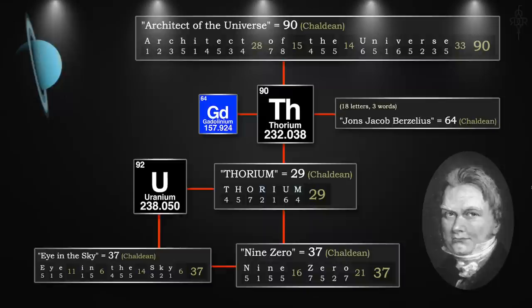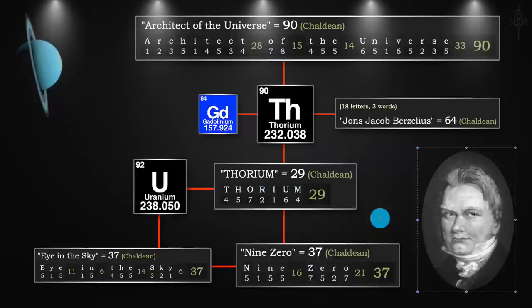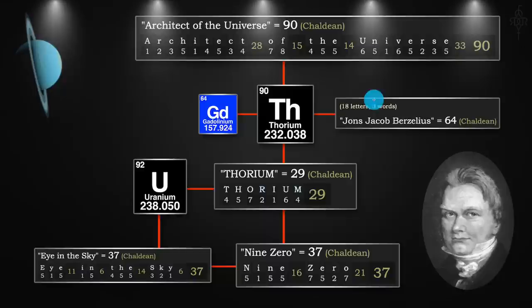We're going to start with the architect of the universe — you can clearly see at the top there it's the number 90. We bridge it with alchemy and we get this amazing element called thorium. Thorium is of course tied to Thor, Asgard, Norse mythology, and Jesus, if you want to attach Thor to Jesus. What's really interesting is this gentleman who discovered thorium — Jöns Jacob Berzelius — his name numerology is the number 64, which goes right back to alchemy and the gadolinium element. His name is 18 letters total, and Jesus is 18.